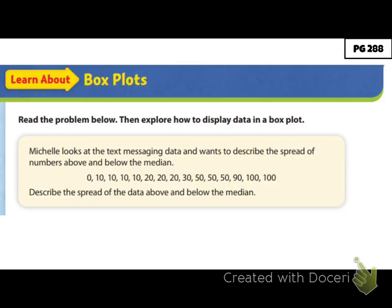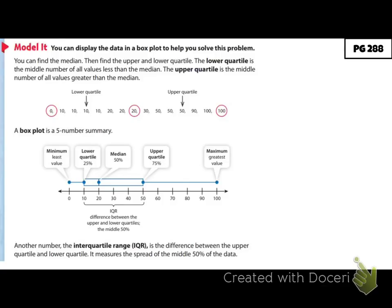Now we're going to talk about box plots. Michelle looked at the text messaging data and wants to describe the spread of numbers above and below the median — remember, the median is our middle number. A box plot can help us solve this problem. You find the median, then find your upper and lower quartile. Your lower quartile is the middle number of all values less than the median — you're finding the middle of the bottom half — and your upper quartile is the middle of all numbers greater than the median.